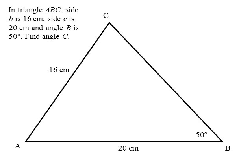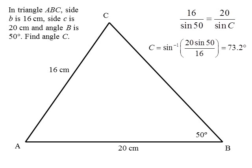One more example: you've got side 16, side 20, angle 50. You need to work out angle C up the top there. Can use the sine rule, angle C is 73.2, but you could also draw the triangle like this.